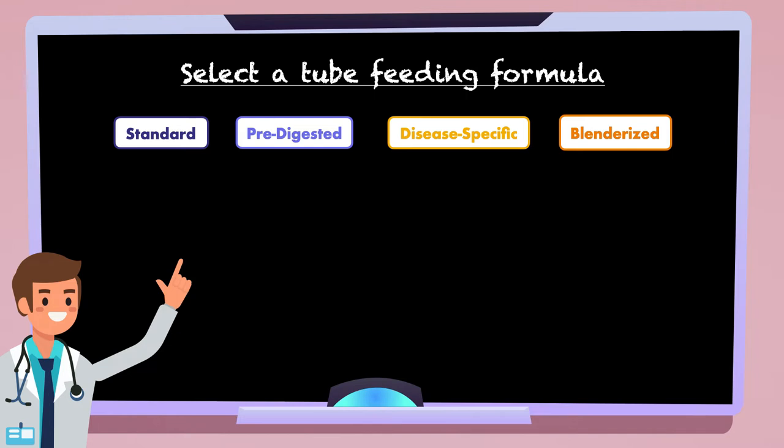Since Mr. Jones is intubated in an acute care setting, a blenderized formula is not going to be the best option. Mr. Jones doesn't appear to have any unique nutritional needs to warrant a disease-specific formula either, and there are no known gastrointestinal issues that would lead us to consider pre-digested. So, the obvious choice is to begin with a standard formula.